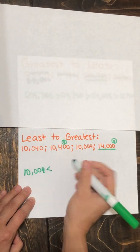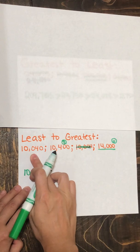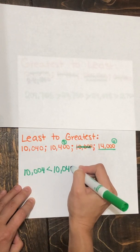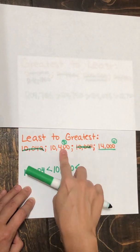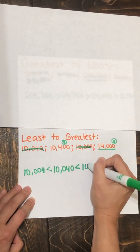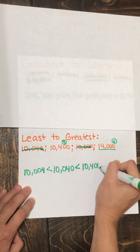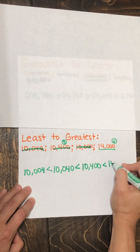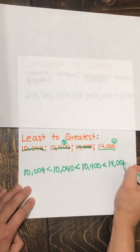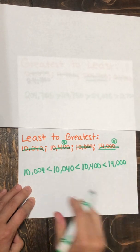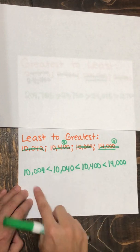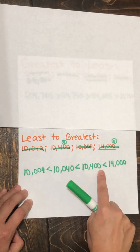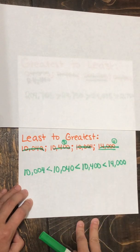And we know it's going to be less than our next smallest number of 10,040. We know that's going to be less than our next smallest number of 10,400. Finally, that's going to be less than our greatest number of 14,000. So we can read our number sentence together one more time. 10,004 is less than 10,040 is less than 10,400 is less than 14,000.